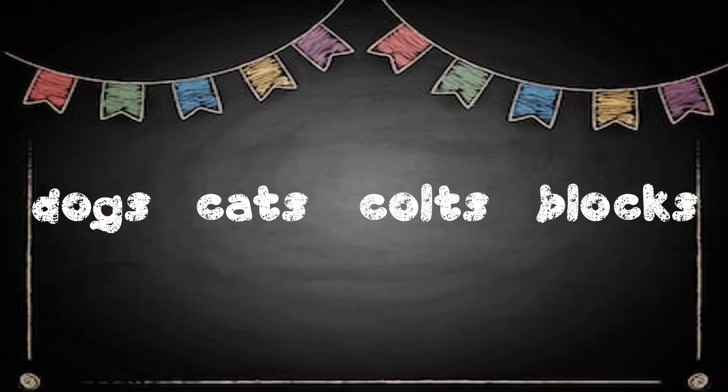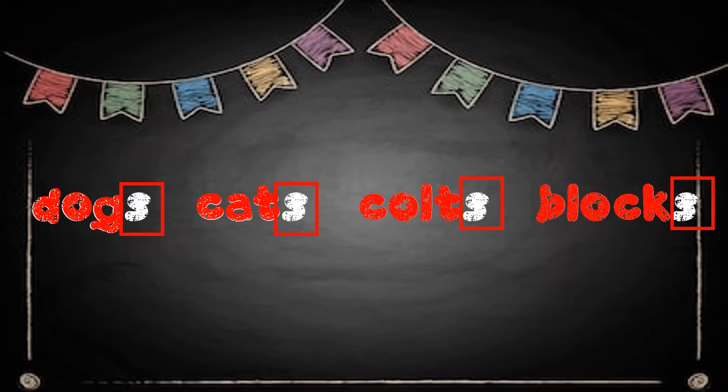When the letter S is added to the end of a word, it makes the word plural. Plural means more than one. When we see a suffix on a word, we box it in and then we make sure that there is a root word left. A root word is a simple word that doesn't have anything added to it, such as a suffix. After we boxed in these suffixes, there was a root word left in each: dog, cat, colt, block.